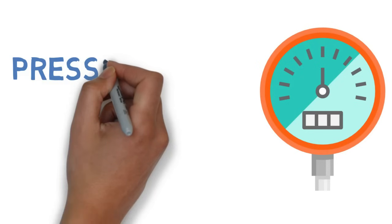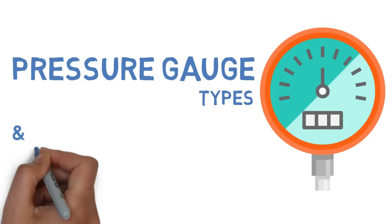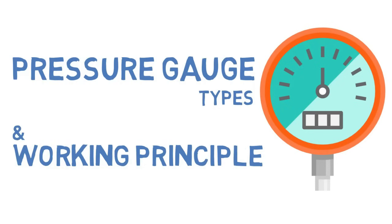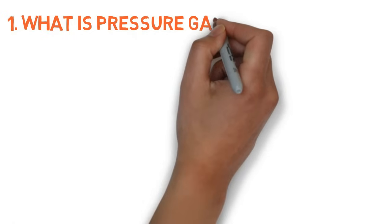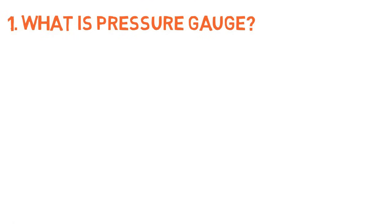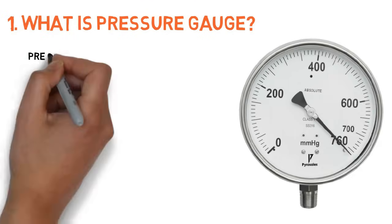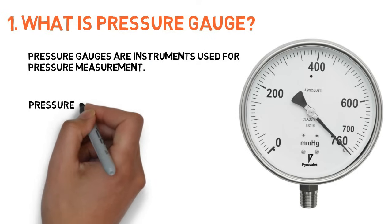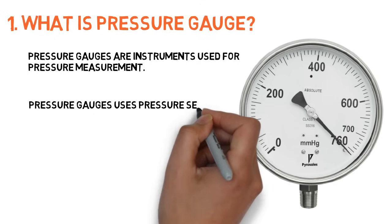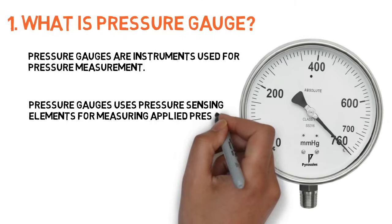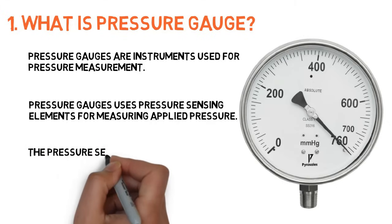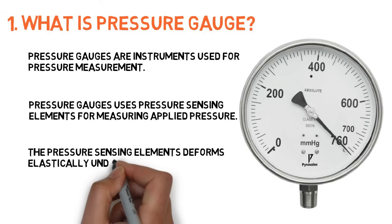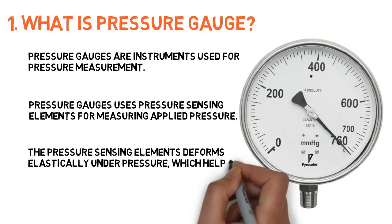In this video, we are going to see about types of pressure gauge and its working principle. Pressure gauges are instruments used for pressure measurement. Pressure gauges use pressure sensing elements for measuring applied pressure. The pressure sensing elements deform elastically under pressure, which helps in measurement.